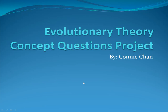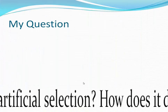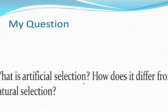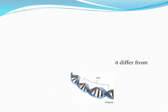Here is my project on the question that we were to choose in class. My question is: what is artificial selection and how does it differ from natural selection?